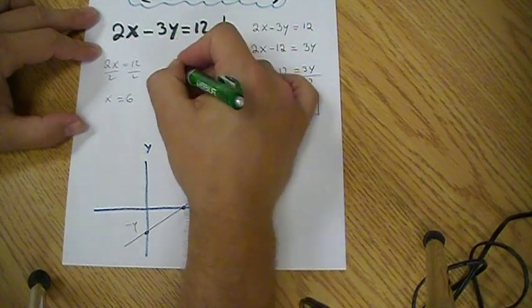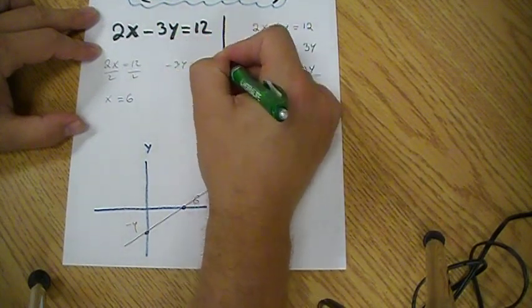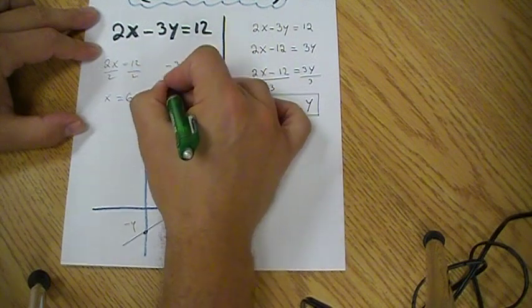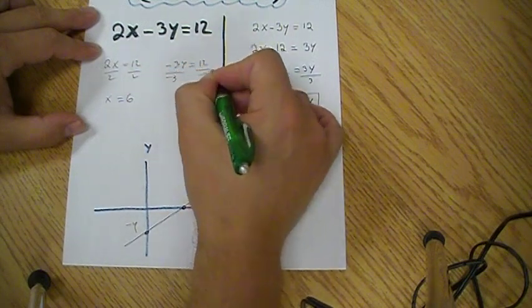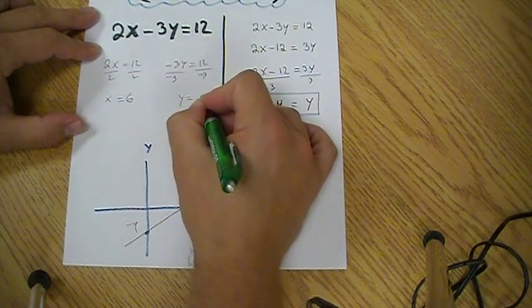And here from this side, you say minus 3y is equal to 12. You will divide both sides by minus 3, and that gives you that y is equal to negative 4.